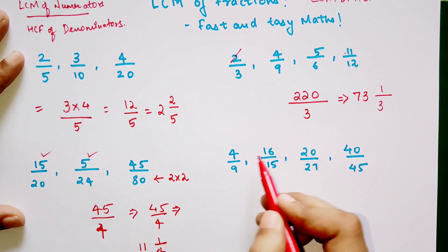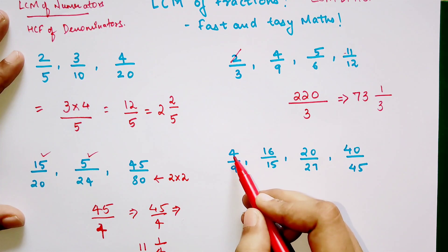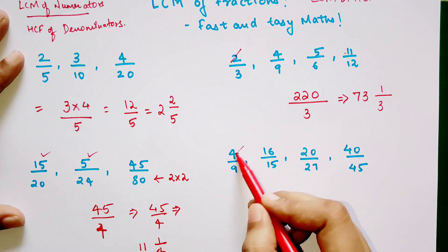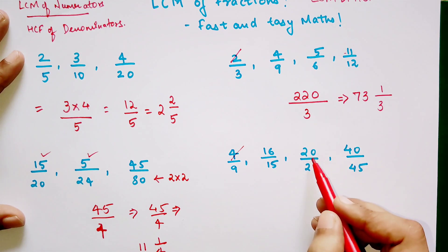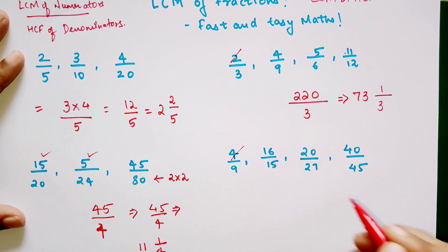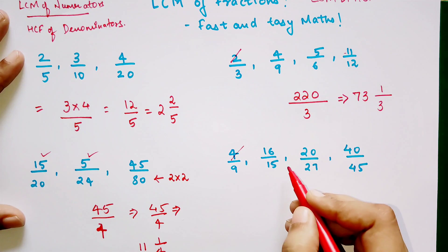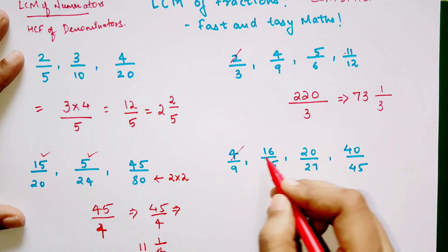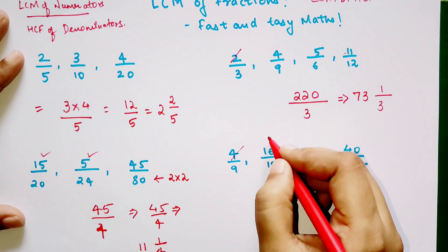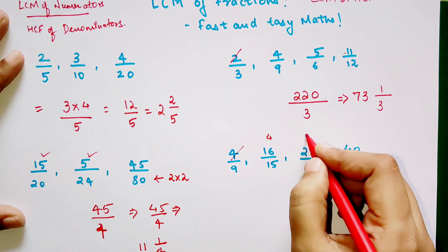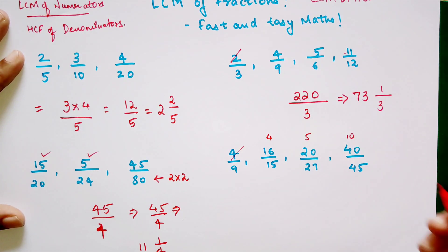But now when you have 20 and 40 also in 4's table, when you cancel all of them by 4, what you get is 4, 5, and 10. So basically you have already taken 4 out.